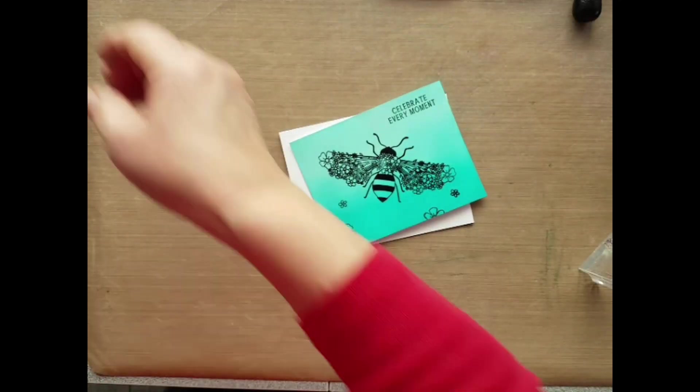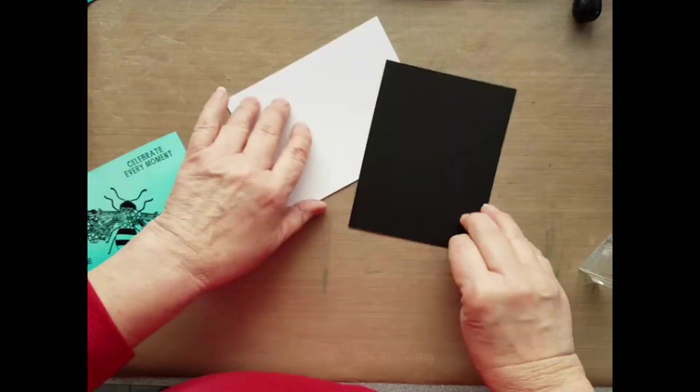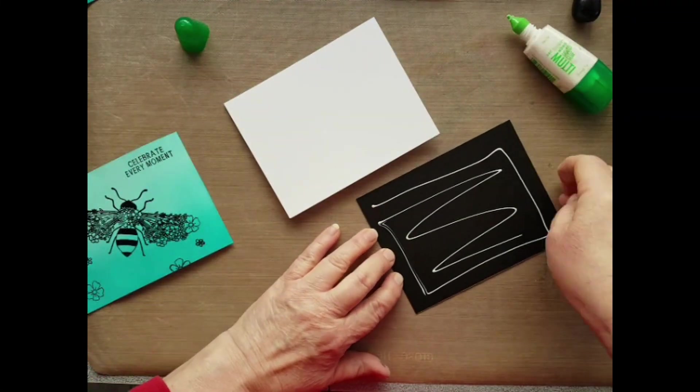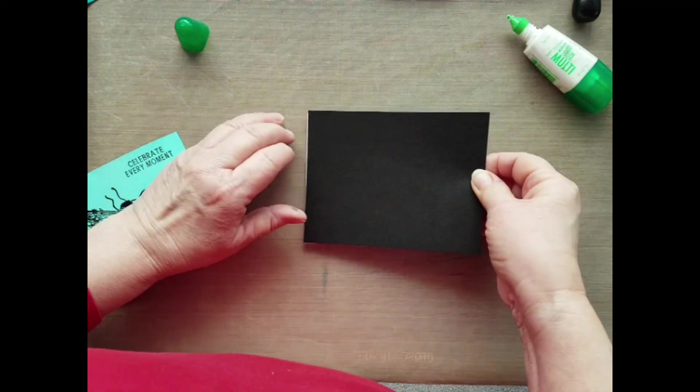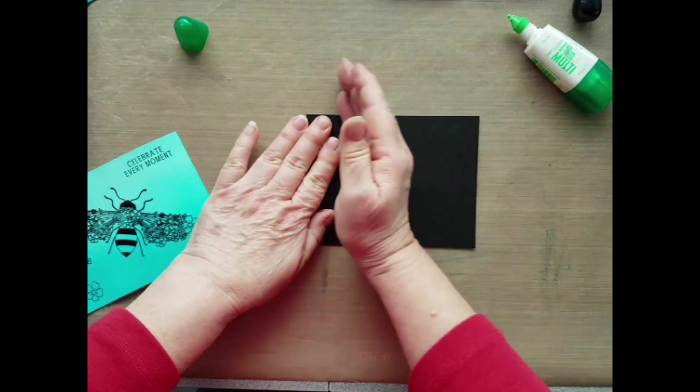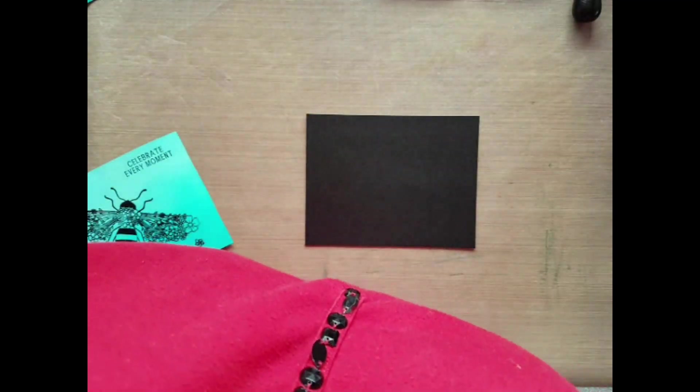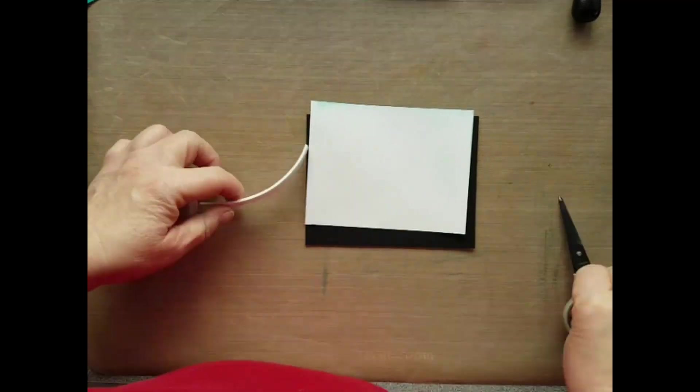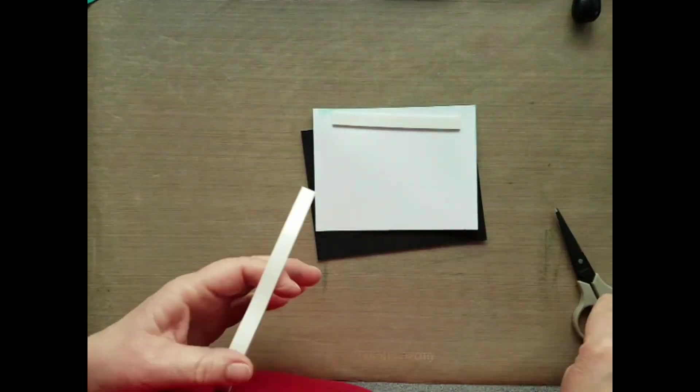We'll get our piece of card and some black cardstock and attach to the card front. Then we'll get some 3D foam tape and pop up the stamped image.